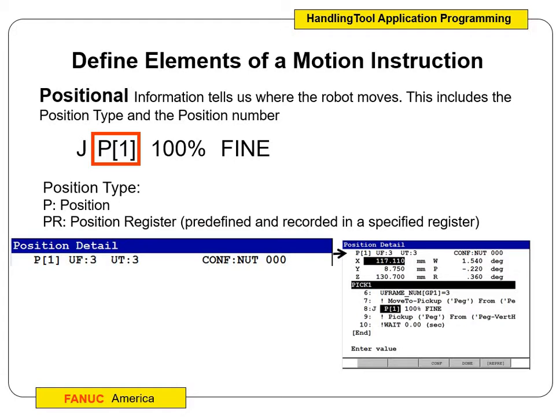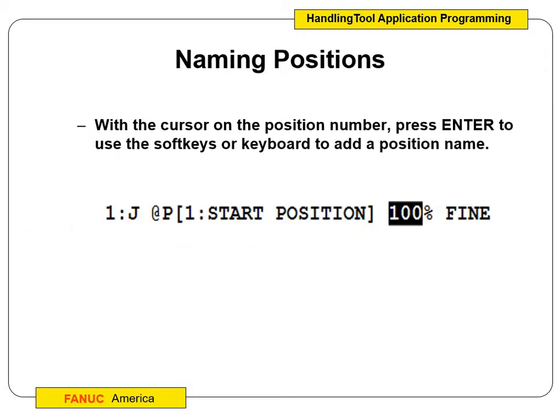Position versus position register: please remember that a position — point one or position one — is local to your specific program. In your box program you did positions one, two, three, four, five, six, seven, and so on. When we do a position register, it's global and we can write your perch position as a position register. So when you're writing your program, you can just call out your position register instead of re-recording the position every time. We'll also record a home, safe, and maintenance position as position registers, and I'll assign each of you specific position registers.